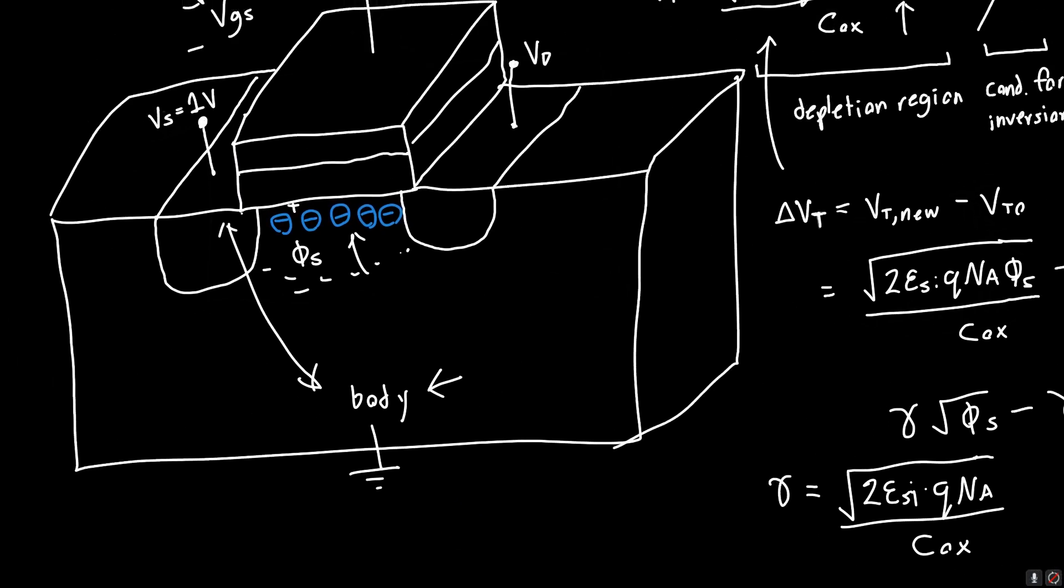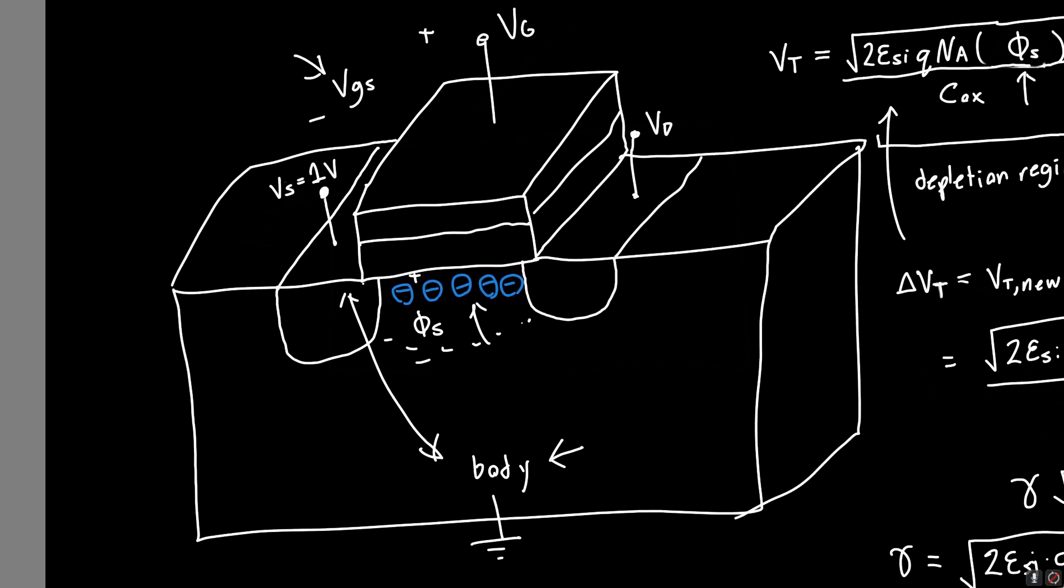We just need to figure out what is psi_S. If we take a look back at our diagram, let's assume that the channel is inverted, so we have electrons floating around everywhere in the channel along with the depletion region. Let's assume that the source voltage is at the same value as the drain voltage for now, say one volt. Then what is the surface potential going to be?